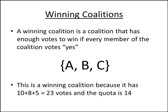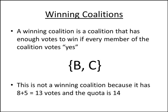A winning coalition is a coalition that has enough votes to win if every member of the coalition votes yes. In our example where the quota is 14 and we have four voters A, B, C, and D whose votes are worth 10, 8, 5, and 2 respectively: the coalition with A, B, and C is a winning coalition because it has 23 votes and the quota is 14. The coalition with only B and C is not a winning coalition because it only has 13 votes, and the quota is 14.